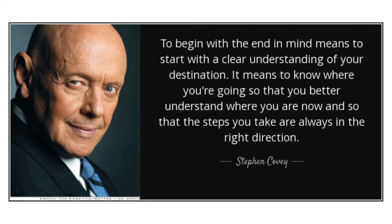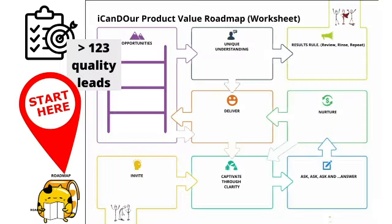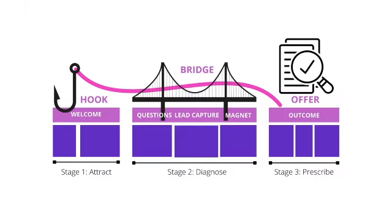A lot of people ask us why we always start with the roadmap — surely we should start at the invite or clarity phase. But we follow the teachings of the late and great Stephen R. Covey and his seminal book, The Seven Habits of Highly Effective People. What he teaches us is to always begin with the end in mind. That's why we start at the roadmap phase.